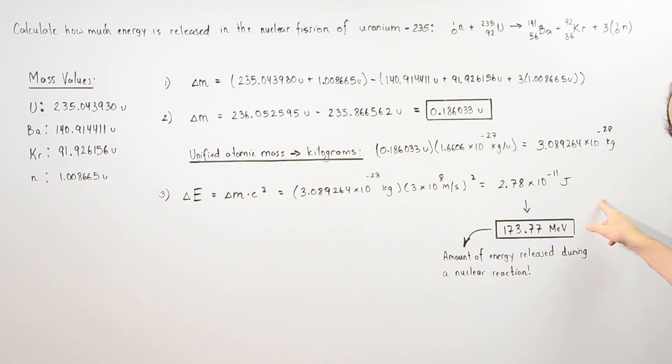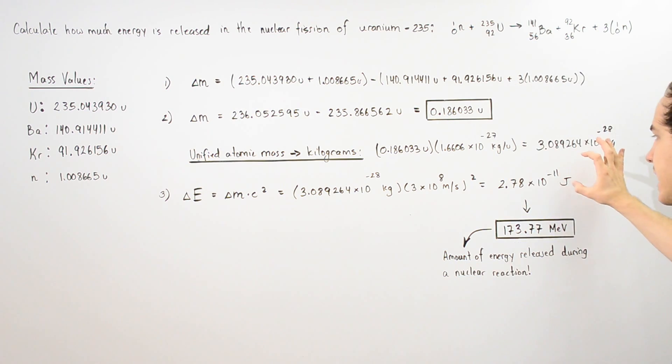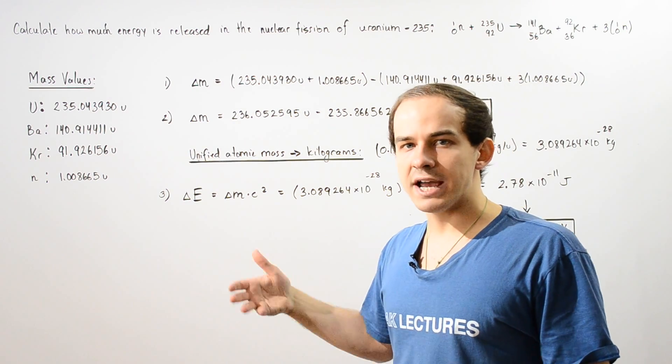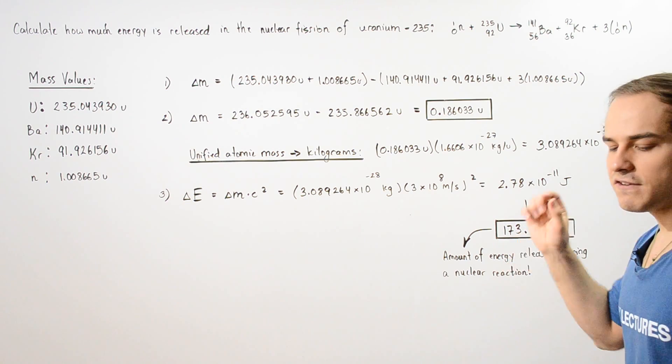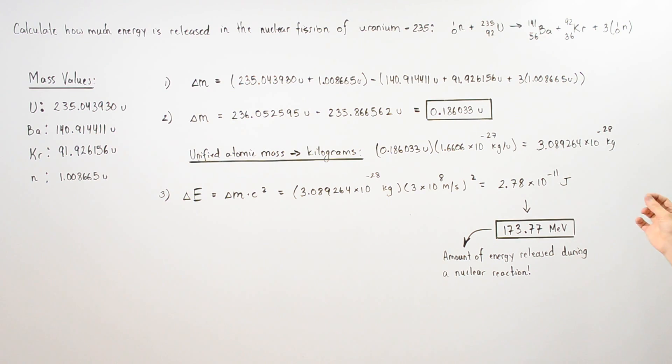Now, we can convert this into mega electron volts, and we get 173.77 mega electron volts. So we basically take this, divide this by 1.6 times 10 to negative 19, and we get the energy in electron volts, and then we divide that value by 10 to the 6, and we get the value in mega electron volts.